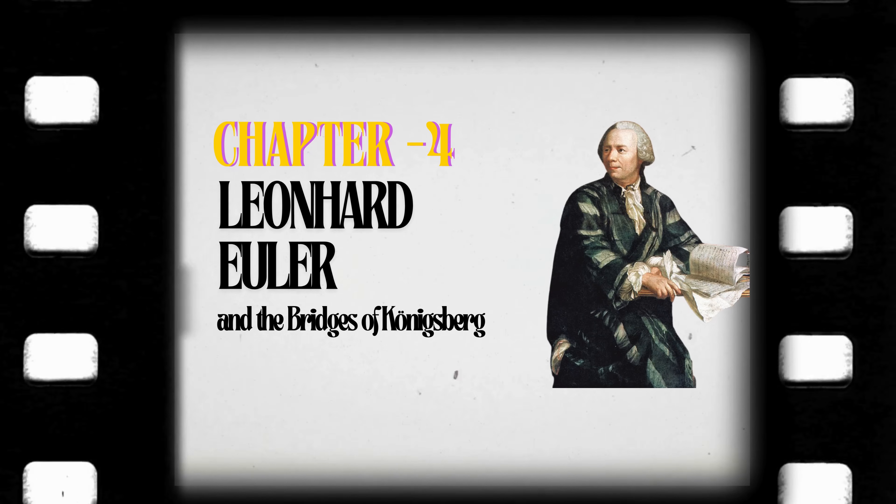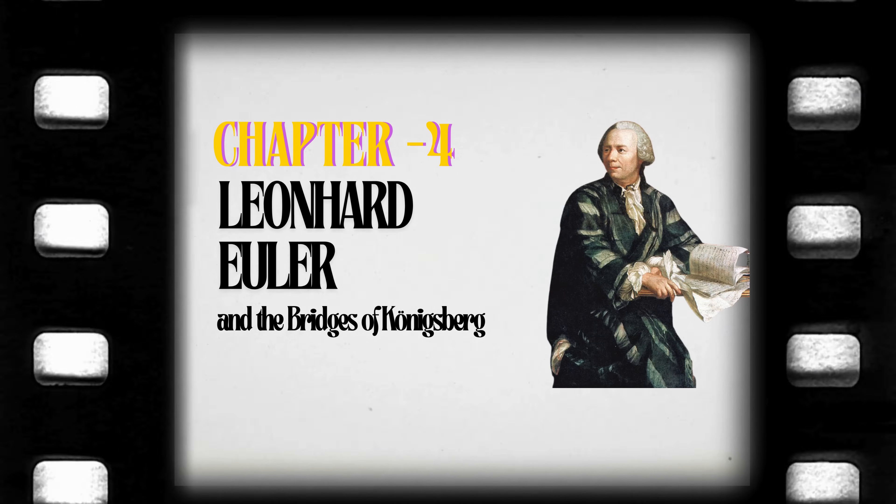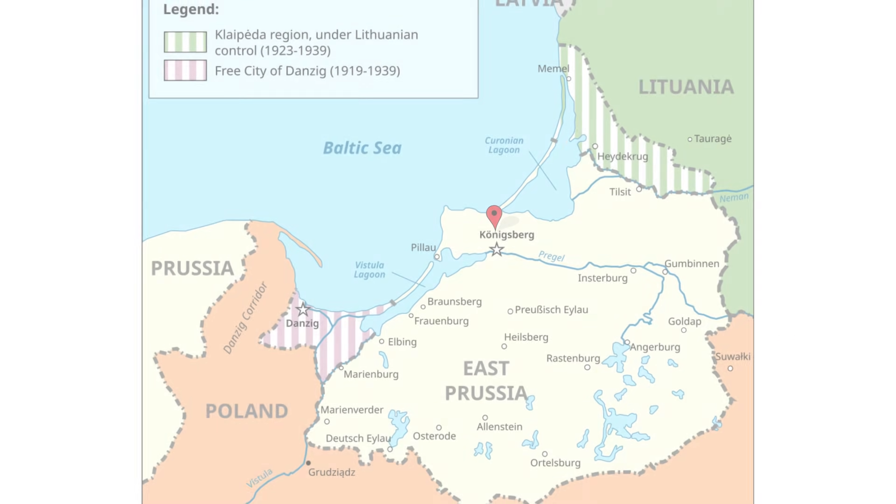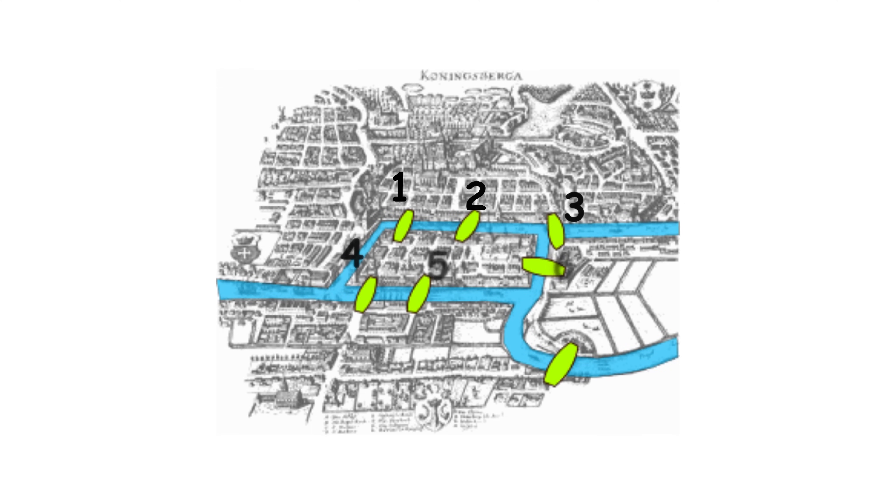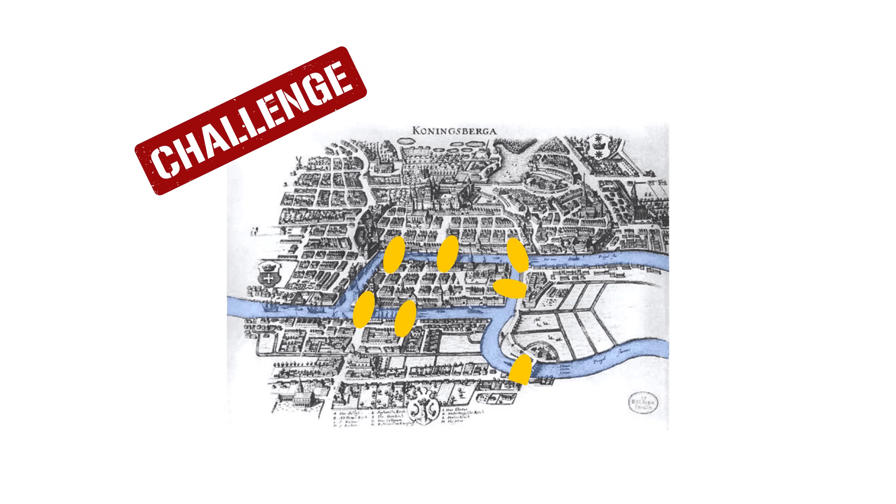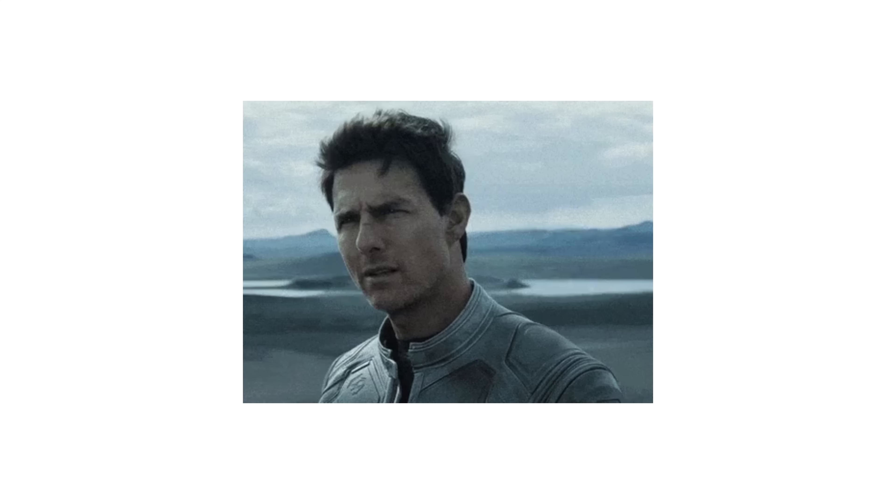Leonhard Euler and the Bridges of Königsberg. In the 18th century, the city of Königsberg, a city in East Prussia and later Germany, which in 1945 became the Russian city of Kaliningrad, had seven bridges connecting different parts of the city over the Pregel River. The challenge was to cross all the bridges exactly once without repeating any. The question seemed simple, but no one could solve it.